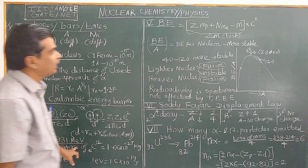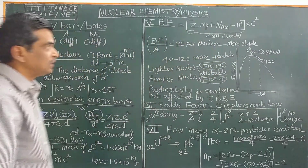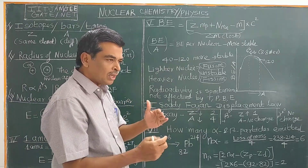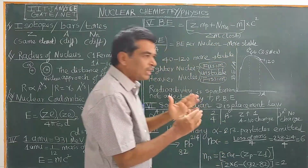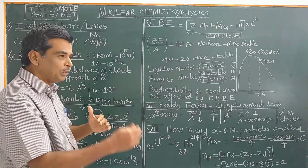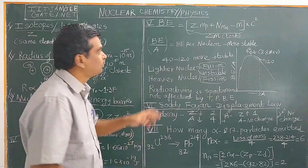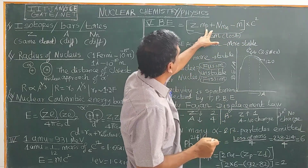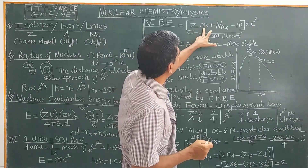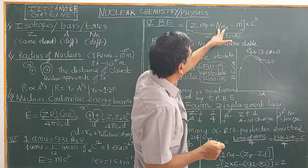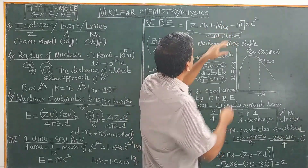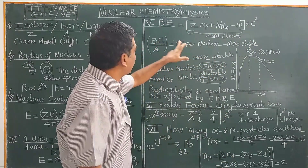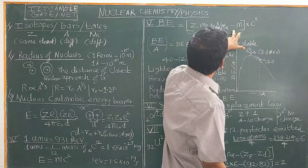Now let us see what is binding energy. When a nucleus is formed from protons and neutrons, some mass is lost. The binding energy is calculated as: BE = [Z × m_p + (A−Z) × m_n − M_nucleus] × c², where Z is the atomic number, m_p is the mass of the proton, m_n is the mass of the neutron, and M_nucleus is the actual mass of the nucleus. The term in brackets is the mass defect, delta m.